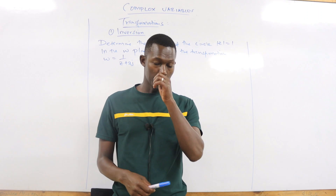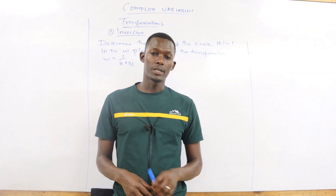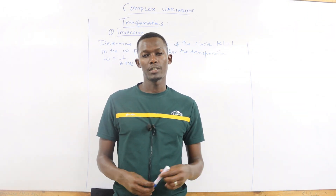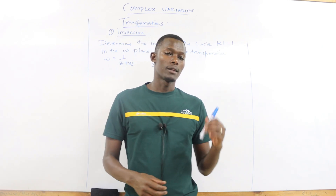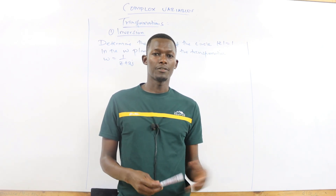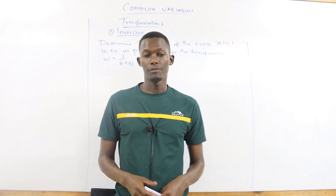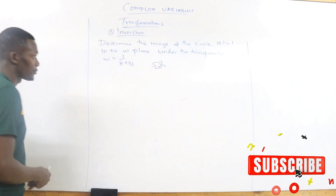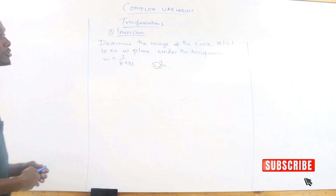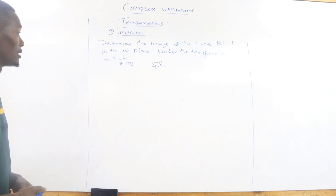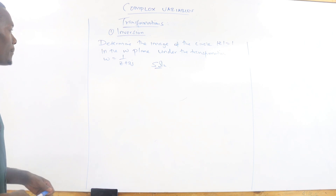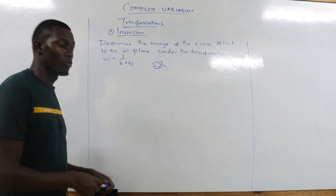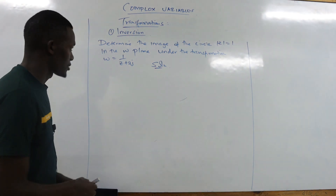My name is Mr. Mesha Kgige and today we check the second example on a complex variable transformation — that is the inverse, asked in a different way. Kindly check the first example if you have not checked it out. We get to the second example: determine the image of the circle |z| = 1 in the w-plane under the transformation 1/(z + 2j).